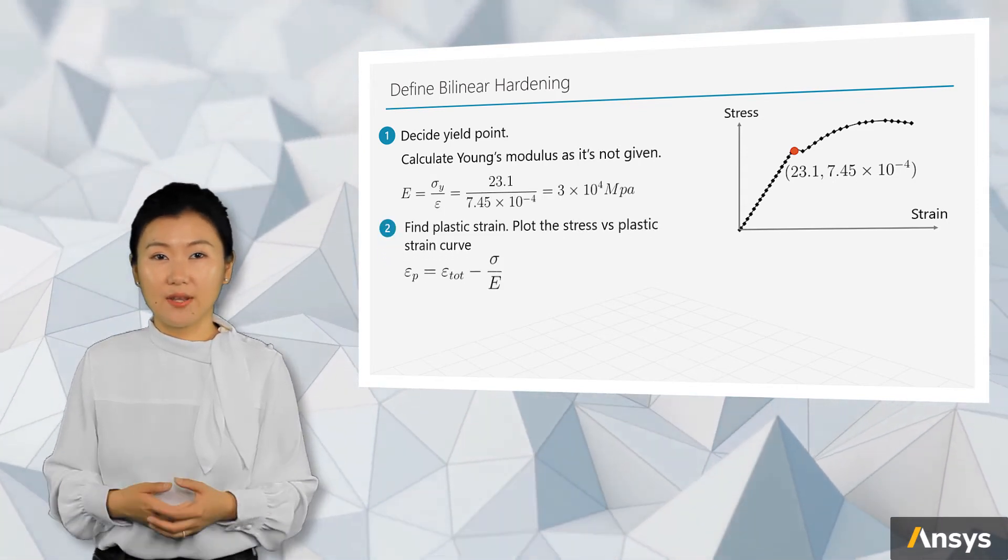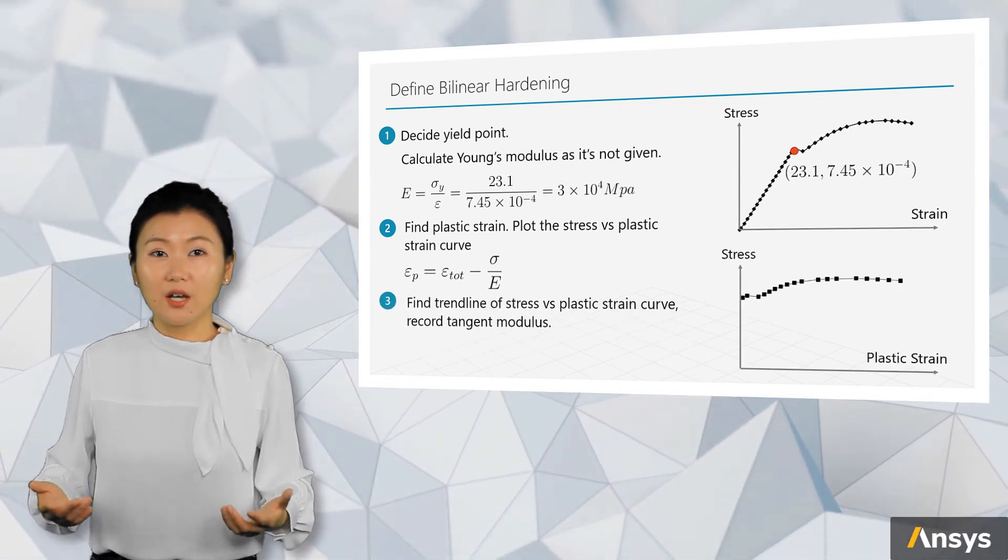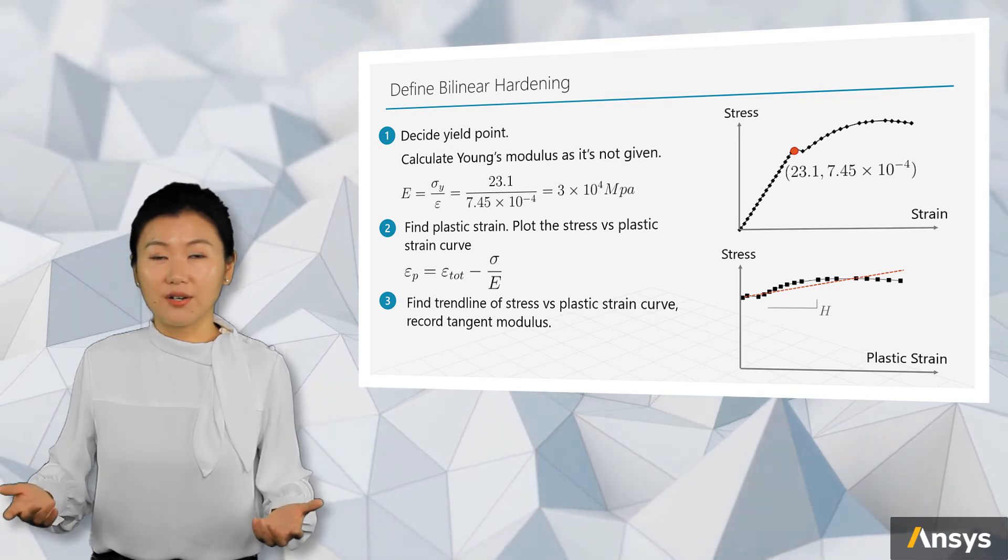Next, we'll find plastic strain and plot stress versus plastic strain curve. Here, we use the trend line of this curve to define our hardening modulus H.